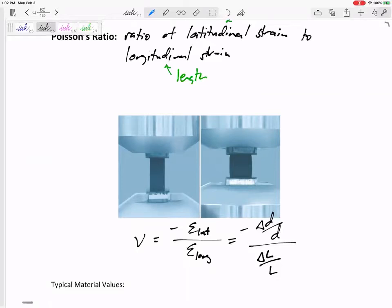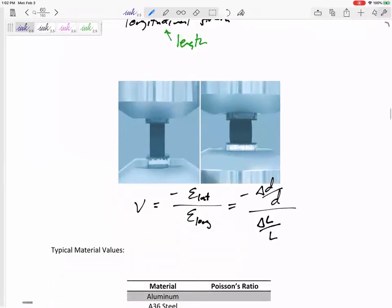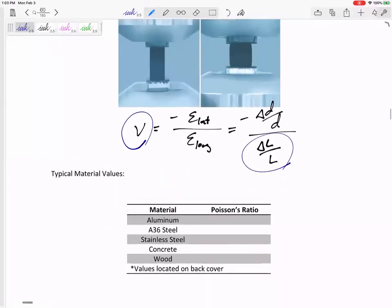So here's what most—nine times out of ten—is going to happen. If you know the strain and you know the material's Poisson's ratio, you can find its change in diameter or its new diameter using this equation.